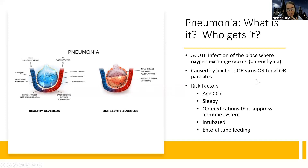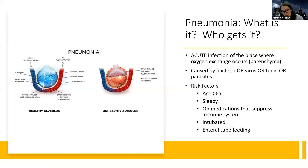Pneumonia can be bacterial, viral, fungal, or parasitic — most often bacterial or viral. Risk factors include older age with weaker muscles and easier aspiration, post-surgery patients, people who are intoxicated, those on immunosuppressant medications, intubated patients who have a direct pathway into their airway, and those on enteral tube feedings at risk for aspiration pneumonia.